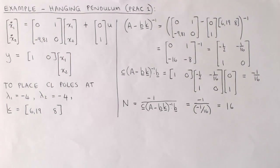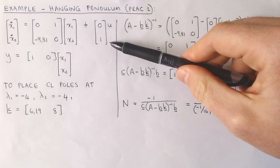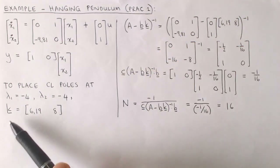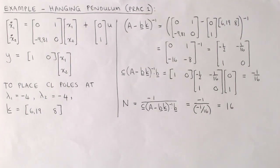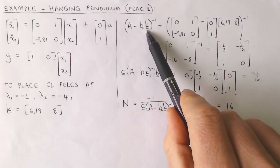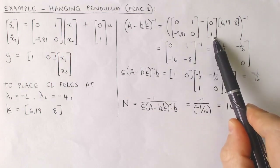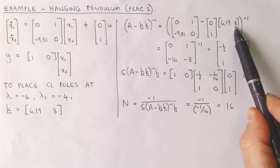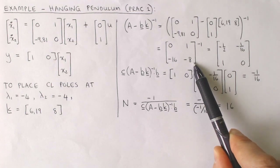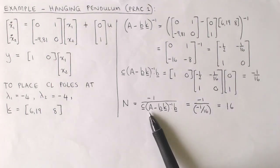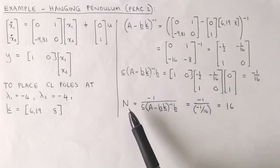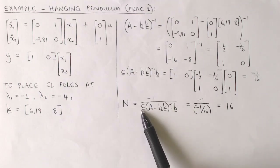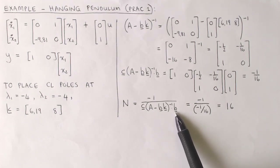To illustrate these concepts, let's work through an example. The plant model is the hanging pendulum model from practical 1, given by this state equation and output equation. Previously we designed the state feedback gain vector k to place the closed loop poles at minus 4 and minus 4. To calculate the reference feed forward gain n, we start with the inverse of a minus b times k. This is matrix a, this is vector b, and this is the state feedback gain k. This is a minus b k, and after inverting the matrix we get this matrix. Next we pre-multiply with vector c and post-multiply with vector b, resulting in minus 1 over 16. The reference feed forward gain n is then minus 1 divided by c times the inverse of (a minus b k) times b, resulting in 16.